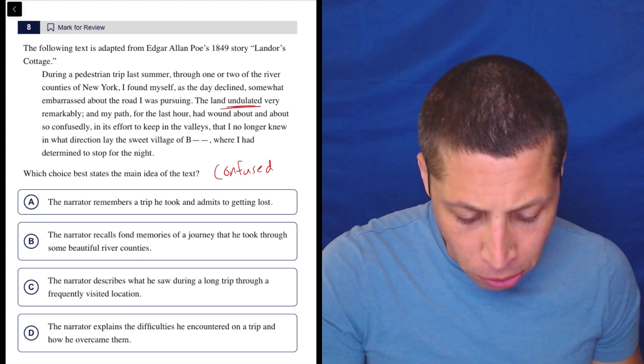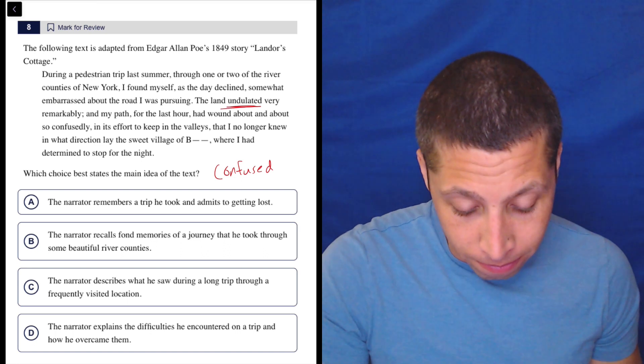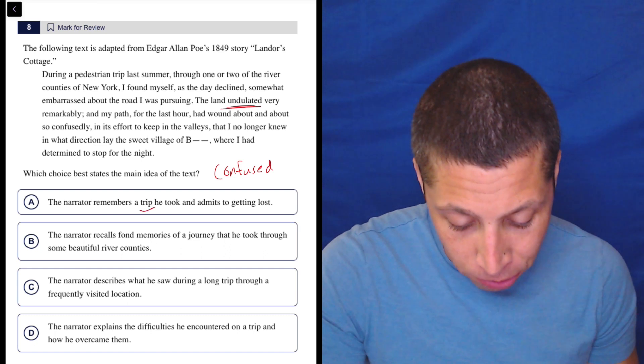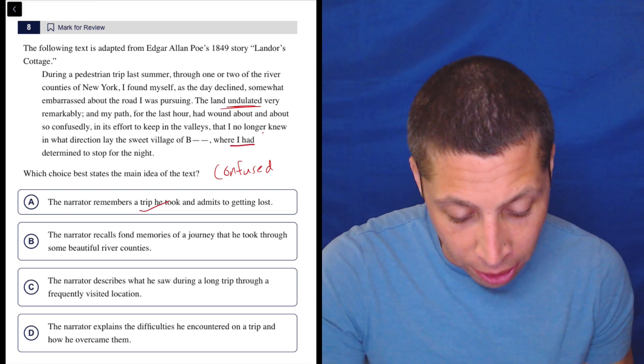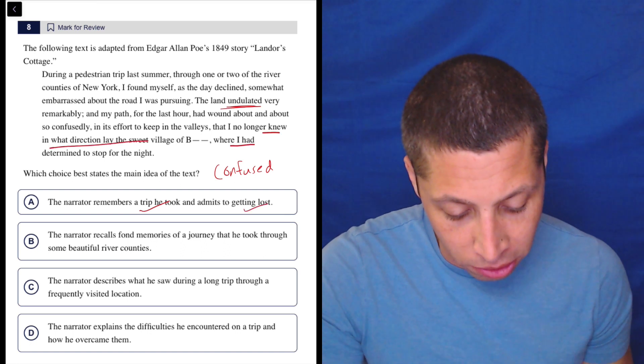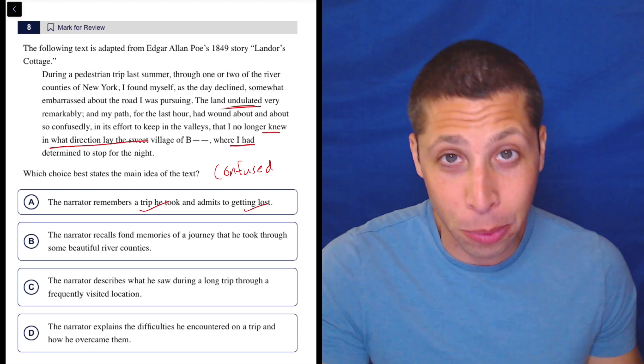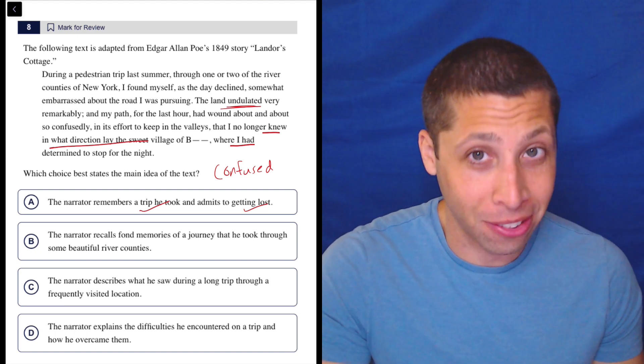A: The narrator remembers the trip he took and admits to getting lost. Yeah? Is he talking about a trip? Check. Is he lost? Yeah. 'I no longer knew what direction was the village.' That seems pretty good. Obviously we've got to read everything else, but that seems obviously right.